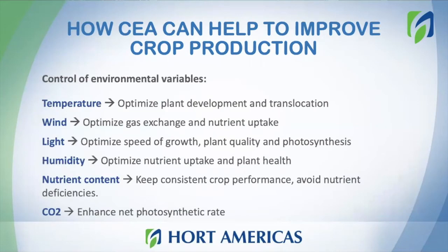Here are the different variables already mentioned, and I have a brief summary of how these variables can improve your production. If you understand temperature, you can optimize plant development. If you understand wind, you can optimize gas exchange, which includes photosynthesis, create a more uniform ambient inside of the greenhouse, and affect nutrient uptake. We need to understand light in order to provide the conditions for the plant to grow. There are different ways to measure light, like light quality or light quantity.